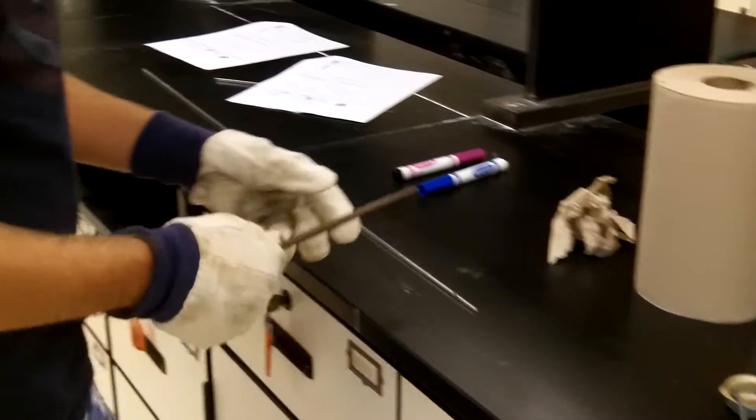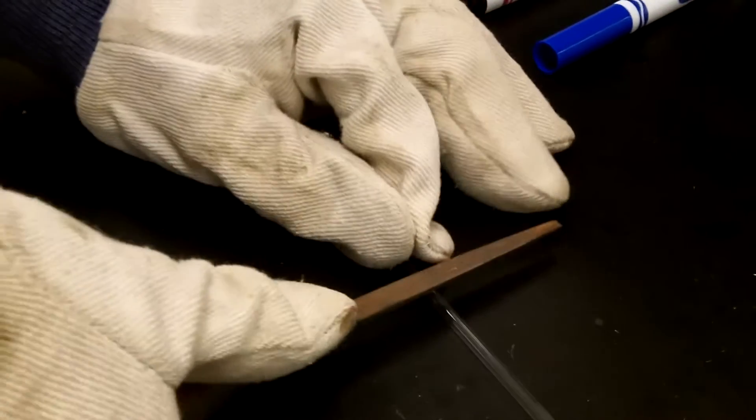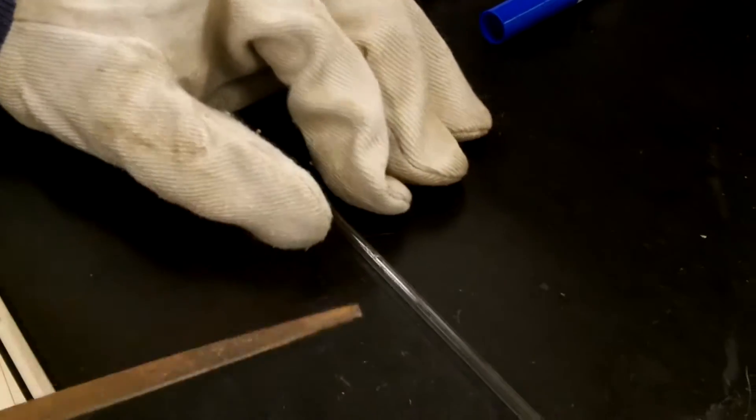When ready, pick up a triangular file and make a mark on the glass tubing. Then, pick it up, point the mark away from you, and snap it in two.